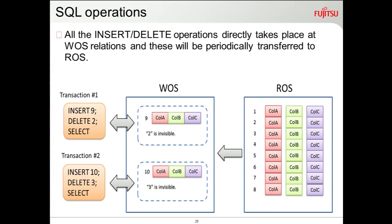For SQL operations: on insert, data is first inserted into the WOS relation only, storing columns A, B, C in row-wise format. Once frozen, it is transferred to ROS. Until then it remains in the WOS relation, like a normal index. On delete, if the data is present in ROS, it is marked as invisible in the whiteout WOS relation — meaning deleted ROS data is stored in whiteout WOS without touching the ROS.